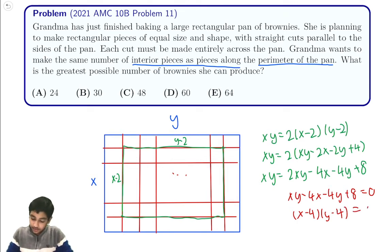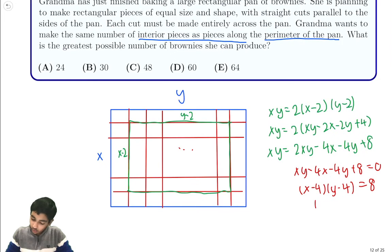From here, we look at the different factor pairs. These are the only two that are relevant. In this case we have x equals 5, y equals 12. And in this case, we have 6 and 8.